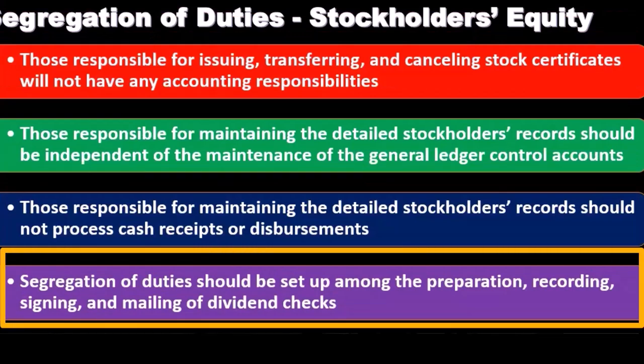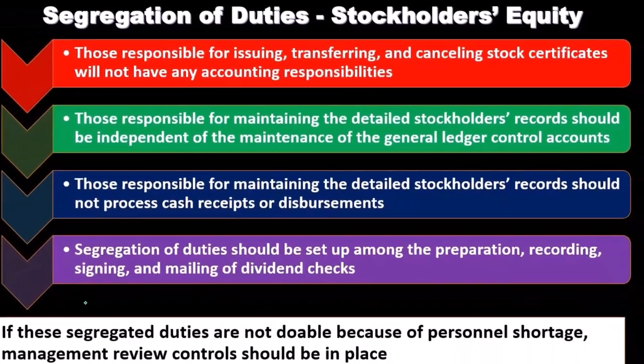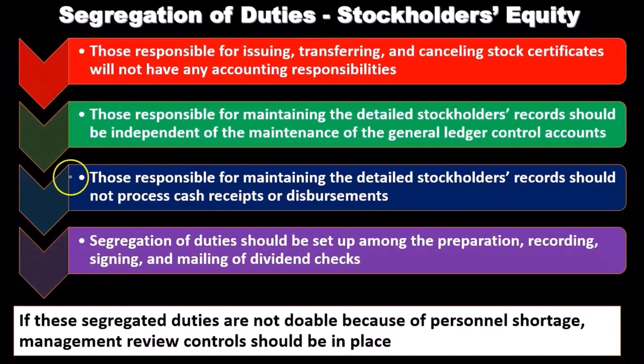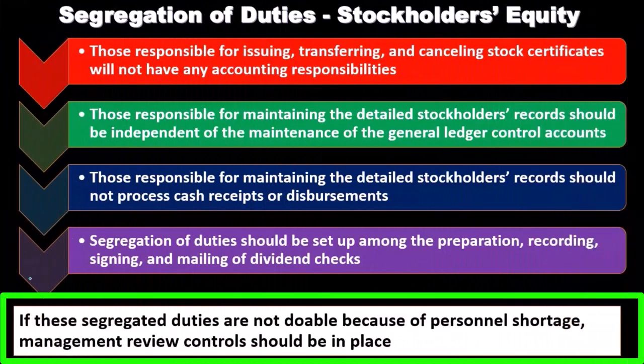Those responsible for maintaining the detailed stockholders' records should not process cash receipts or disbursements. Segregation of duties should be set among the preparation, recording, signing, and mailing of dividend checks. These are fairly heavy segregation of duties — especially the first one, where those responsible for issuing, transferring, and canceling stock certificates will not have any accounting responsibility.